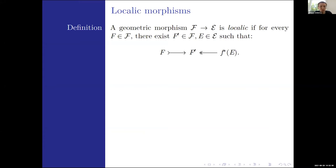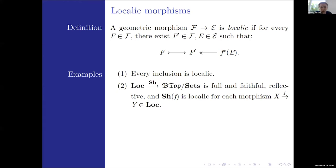For people who haven't seen the definition before, a localic geometric morphism is a geometric morphism from a topos F to a topos E such that every object in our domain topos is a sub-quotient of something in the inverse image of E. Some examples: every inclusion is localic, which tells us that every topos comes attached with at least one localic morphism to another one, because every topos has an inclusion into a presheaf topos. We can also get lots of examples of localic morphisms coming from locales.